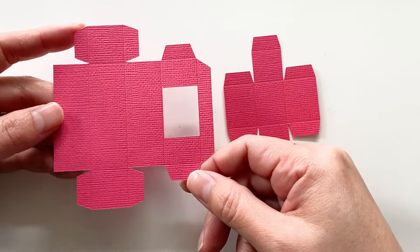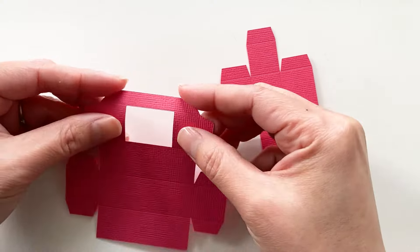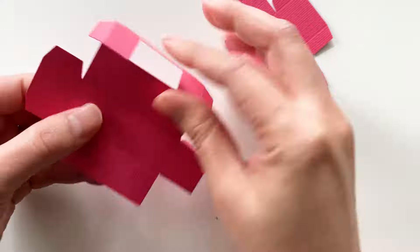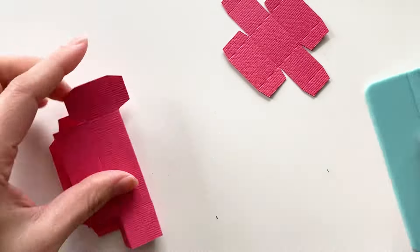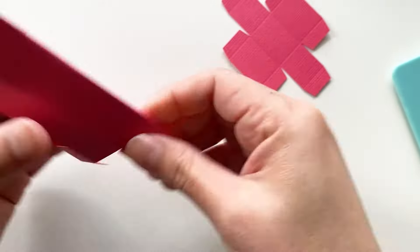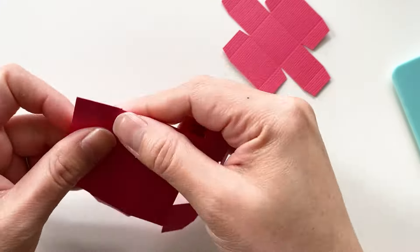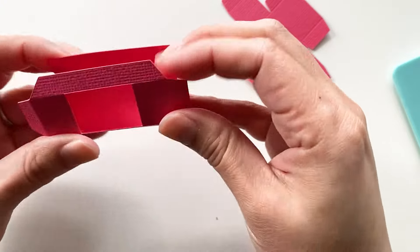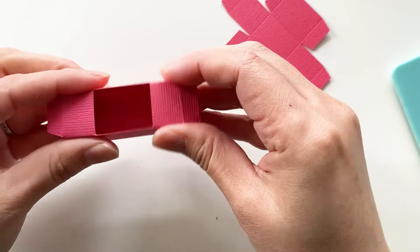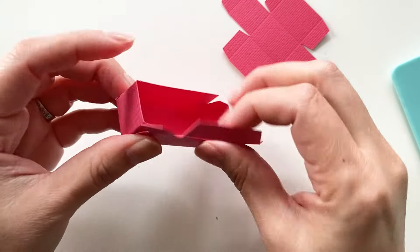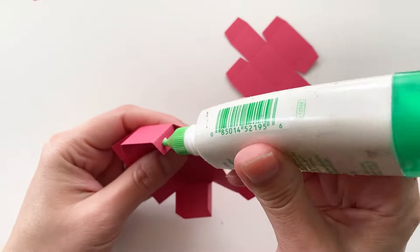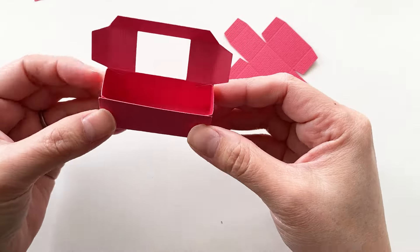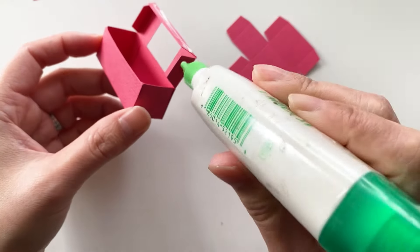These two pieces are for the inside of the gumball machine. Fold all the folding lines. We will make this piece into a rectangle box. Use a hole on the top like this. Just need to glue all the glue tabs together. Apply glue on those glue tabs.